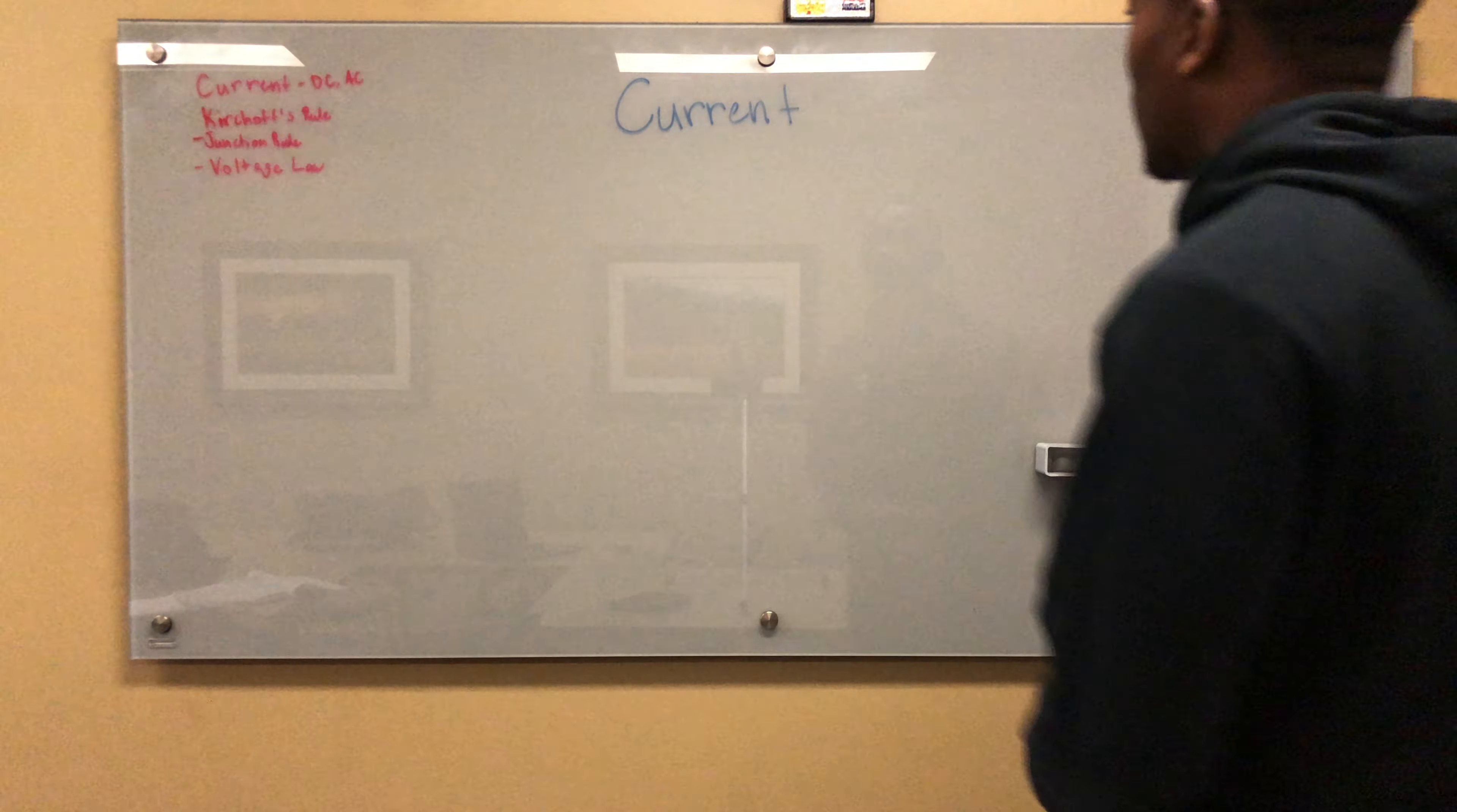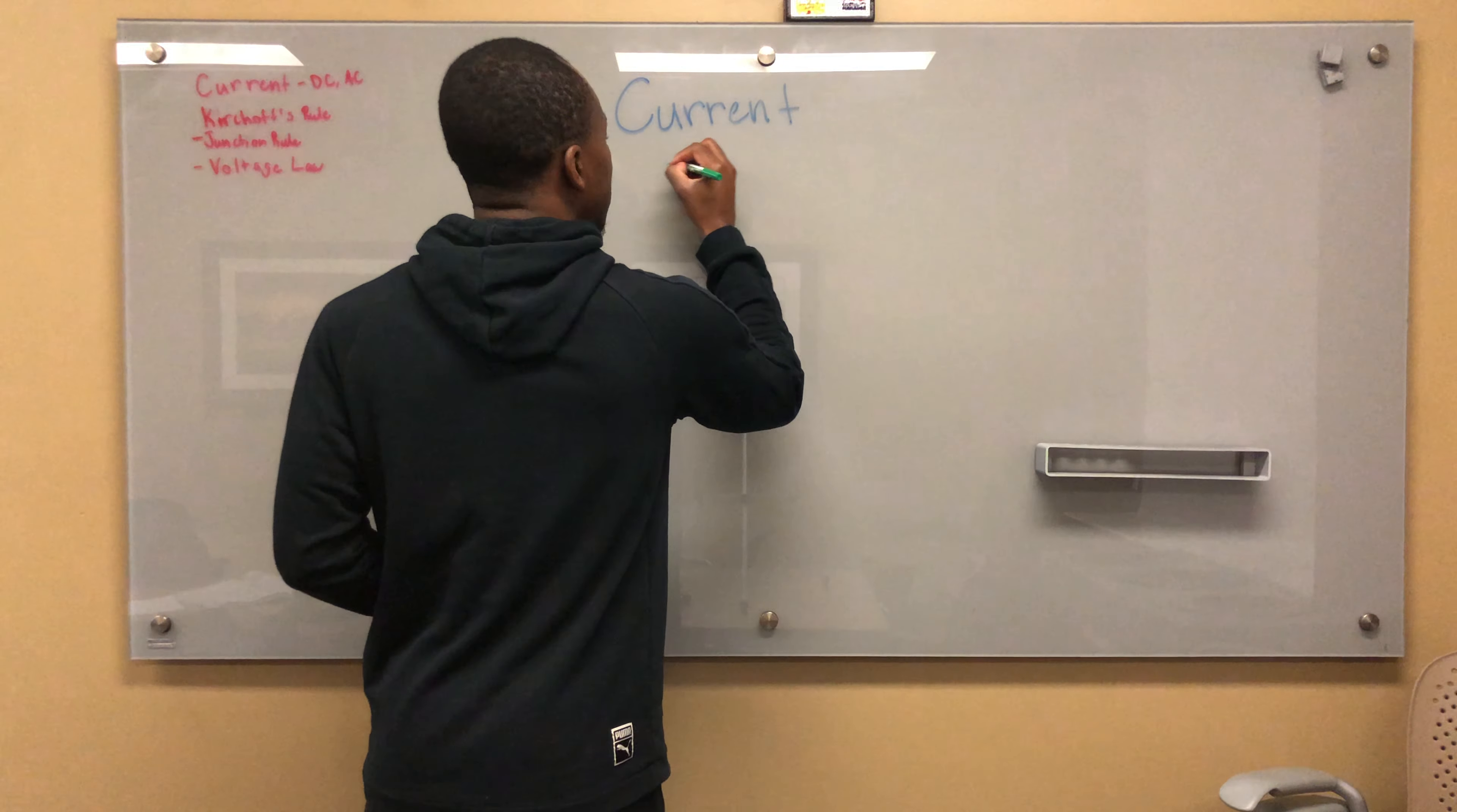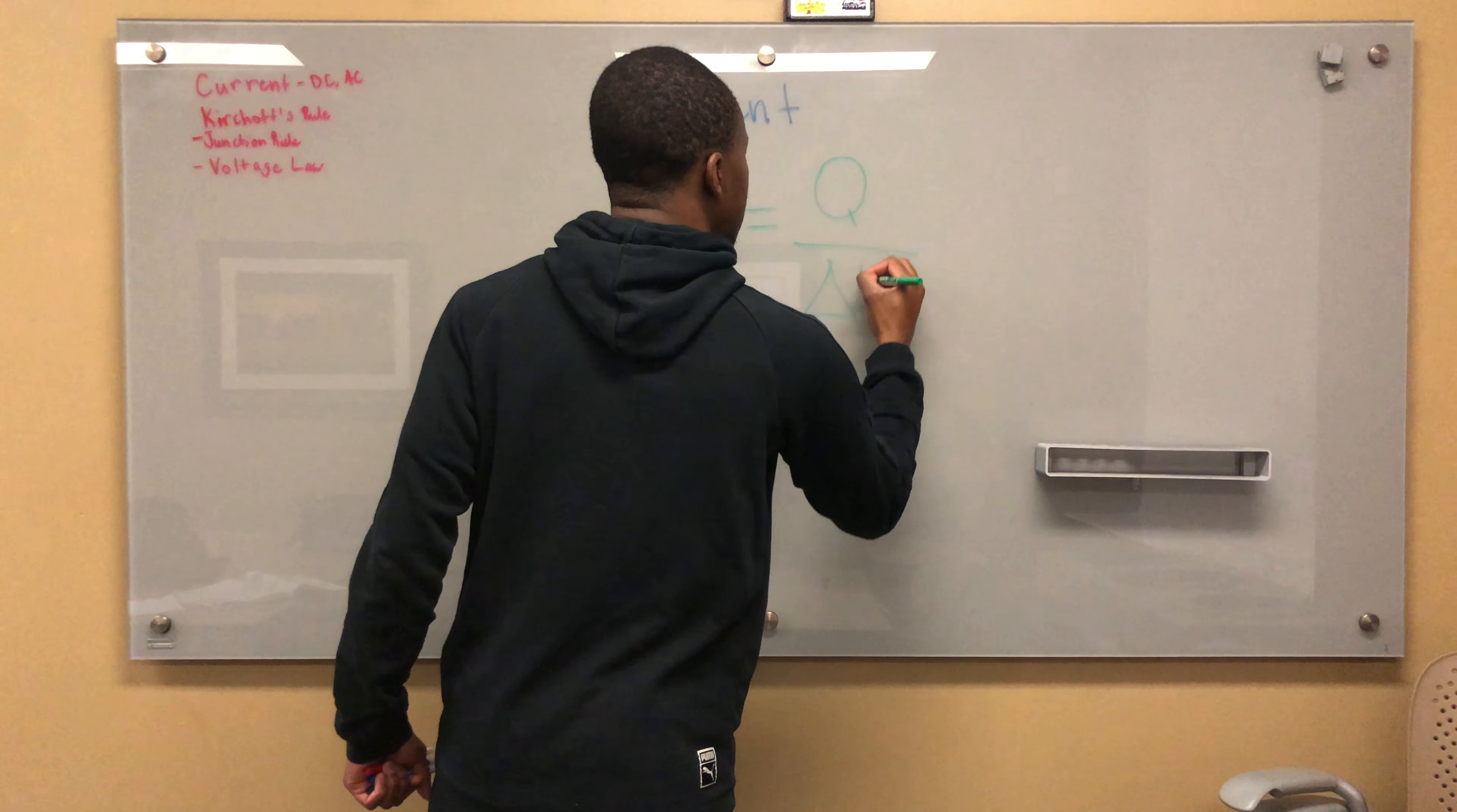Hi everybody, so I want to talk about current today. The first thing you need to know about current is the formula for current, and this is given by I, which is the letter that we use for current, equals Q over delta T.